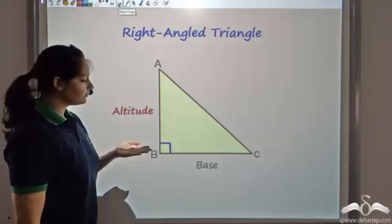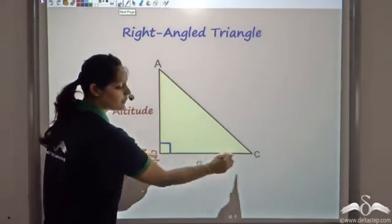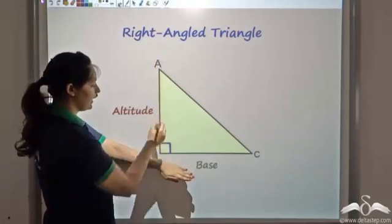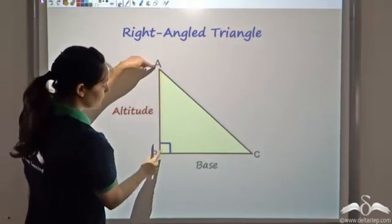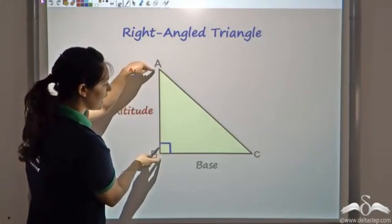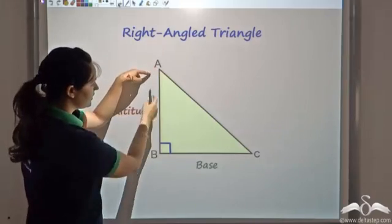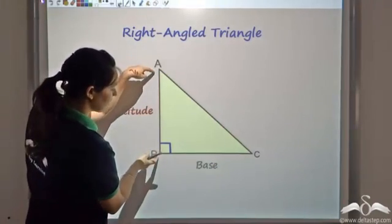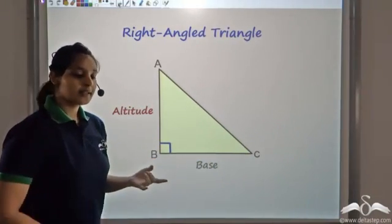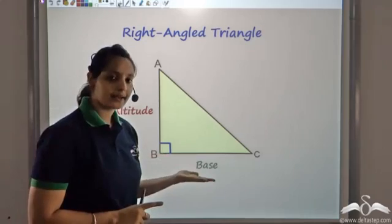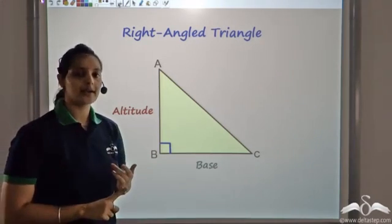In a right-angled triangle, if one of the perpendicular sides is taken as the base, the altitude turns out to be the other perpendicular side. If BC is the base, the opposite vertex is A and the perpendicular from A is simply side AB. Similarly, if AB is the base, then CB becomes the altitude. So in a triangle, any side can be the base, and the perpendicular distance from that base to the opposite vertex is the altitude.